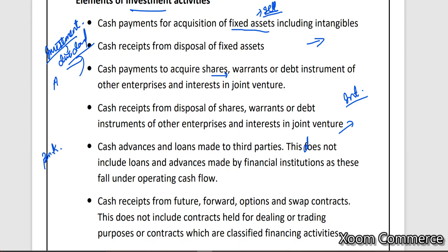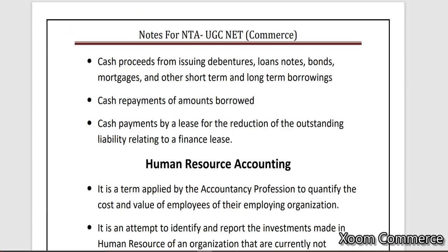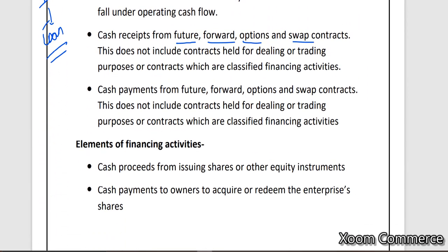See, from the point of view of a bank — a bank also gives loans. But that is not an investing activity for the bank; it is related to the bank's operations. So for a bank, that activity becomes part of operating. A normal business giving a loan from an investment point of view — we include that under investing. Any cash receipt from shares you purchased, futures contracts, forward contracts, options, swap contracts — all things you have purchased or sold from an investment point of view — those will be part of cash flows from investing activities.